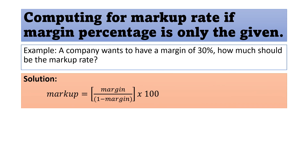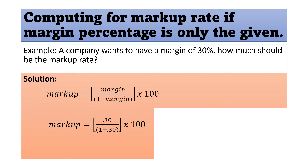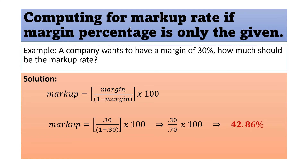We can also use this formula if the given is only the margin rate: markup equals margin divided by (1 minus margin), multiplied by 100. Substituting: 0.30 divided by (1 minus 0.30) times 100 equals 0.30 divided by 0.70 times 100, which equals 42.86%. We arrived at the same answer, so it is up to you which formula to use in converting margin to markup.